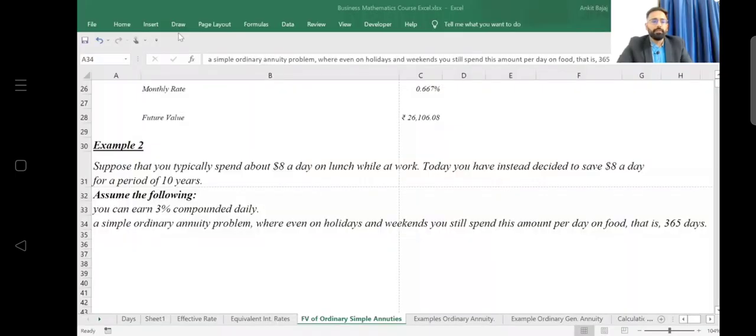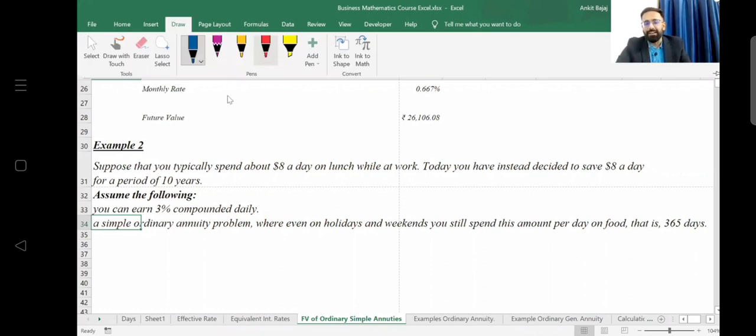Here we will see this example: Suppose that you typically spend about $8 a day on lunch while at work. Today you have instead decided to save $8 a day for a period of 10 years. Assume you can earn 3% compounded daily - it means annually you can earn 3% interest and this interest is to be compounded daily. A simple ordinary annuity prepared, even on holidays and weekends you still spend this amount per day on food, so here you will be getting interest for 365 days.